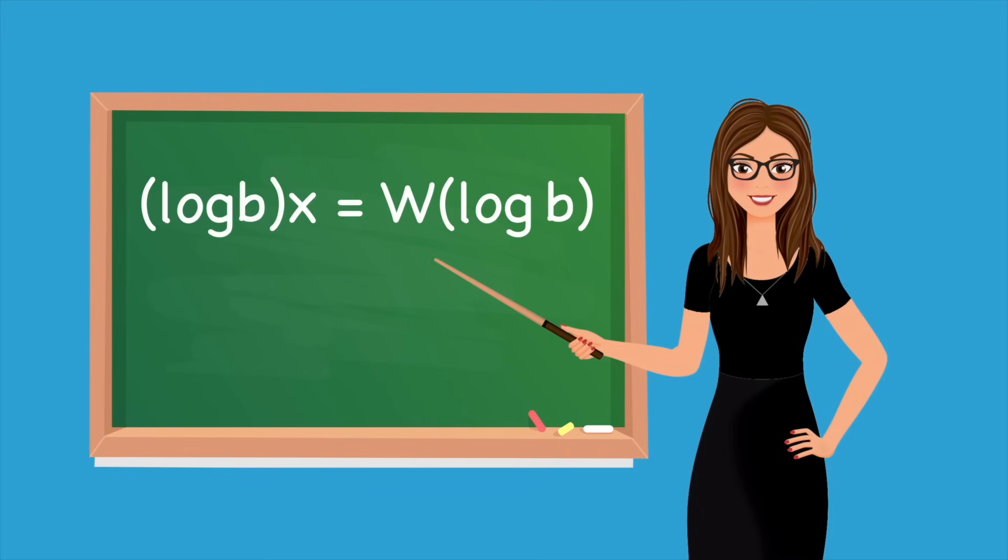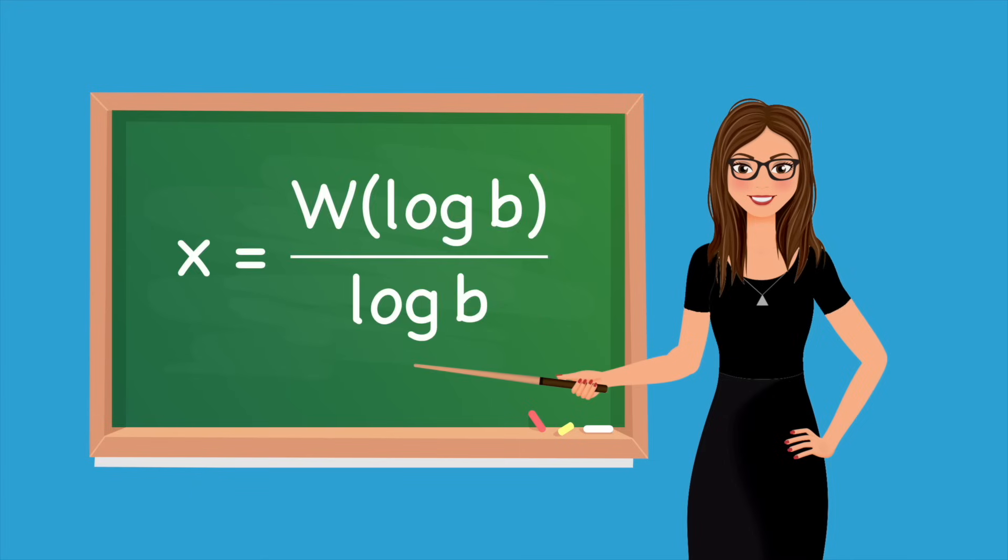And now we see that we are looking at the definition of Lambert's W function on log bx. So we can solve that log b times x equals W of log b, and therefore x equals W of log b over log b. So now we have a nifty formula for any negative exponential fixed point using the Lambert W function.